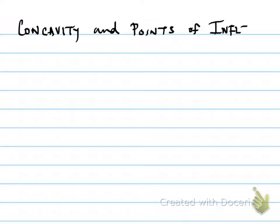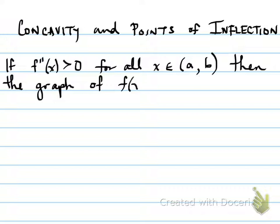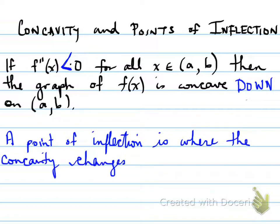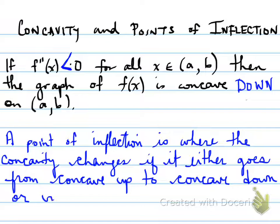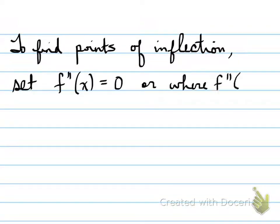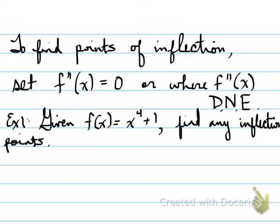Concavity and Points of Inflection. If F''(x) is greater than zero for all x within a certain interval, then the graph is concave up on that interval. If F''(x) is less than zero for all x on an interval, then the graph is concave down on that interval. A point of inflection is where the concavity changes — either from concave up to concave down or vice versa. To find the points of inflection, we must set the second derivative equal to zero, or where the second derivative does not exist. These are our potential points of inflection.